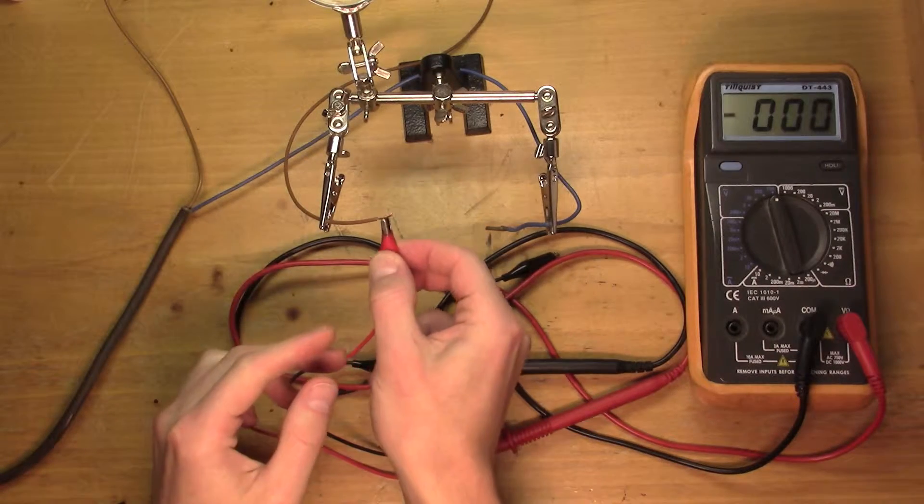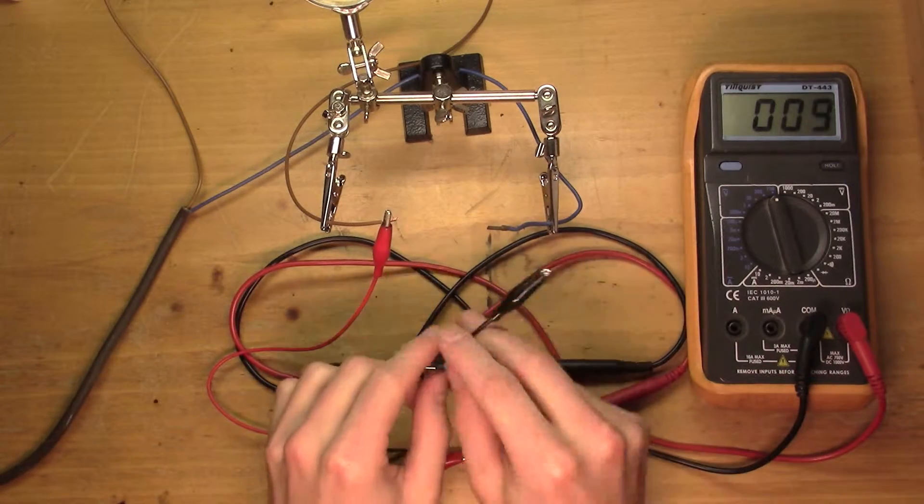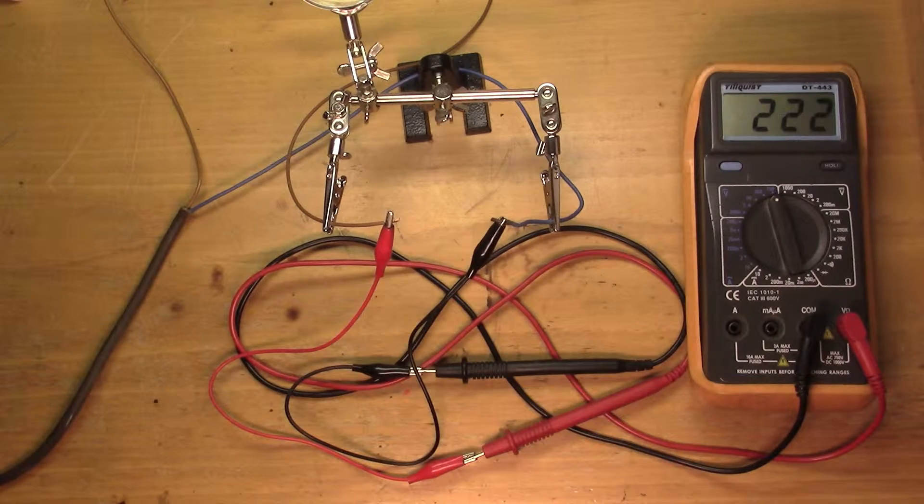It is said that some electricians used to short the main's electricity with their fingers as a fast method of finding out if the power reaches the power outlet.